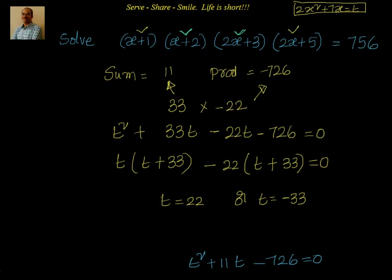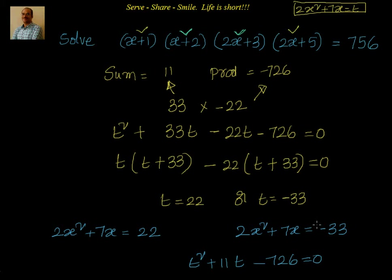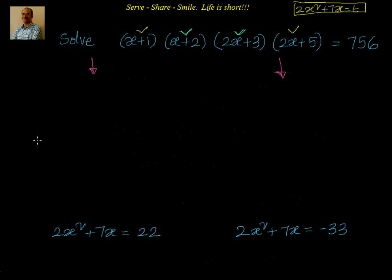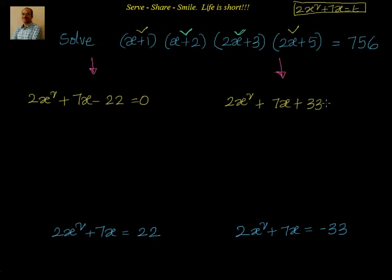We got t equal to 22 or t equal to minus 33. Substituting back, since t is 2x square plus 7x, we get two equations: 2x square plus 7x equal to 22, and 2x square plus 7x equal to minus 33. We now solve these two quadratic equations and we are only interested in real values of x.